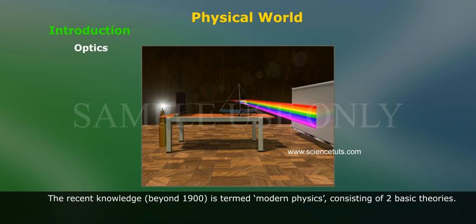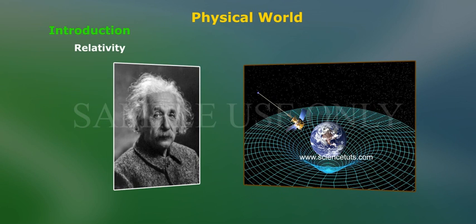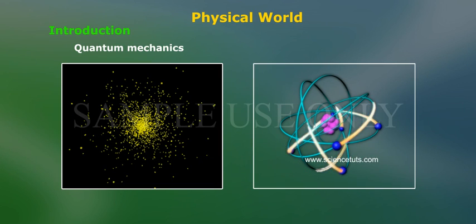The recent knowledge beyond 1900 is termed modern physics, consisting of two basic theories: relativity and quantum mechanics.